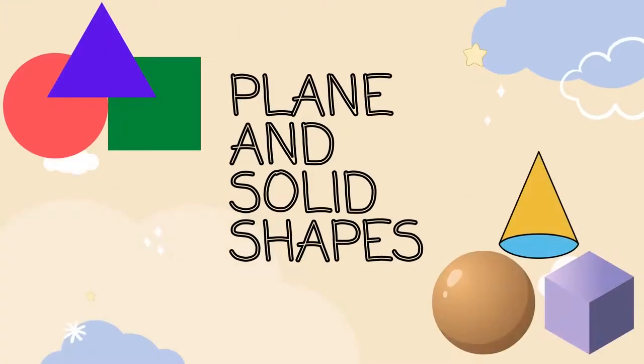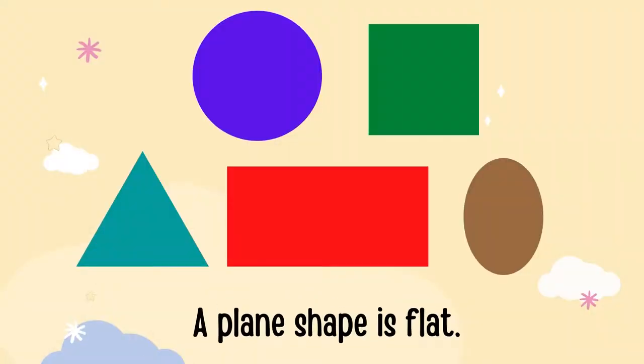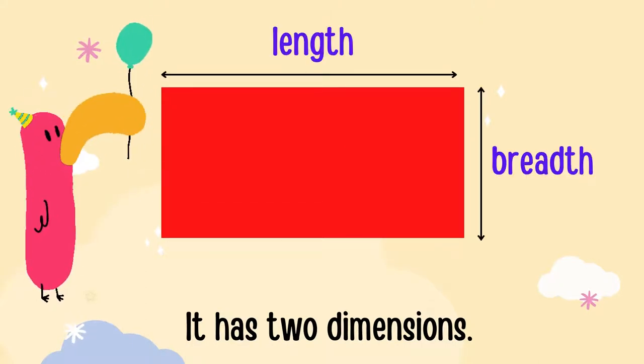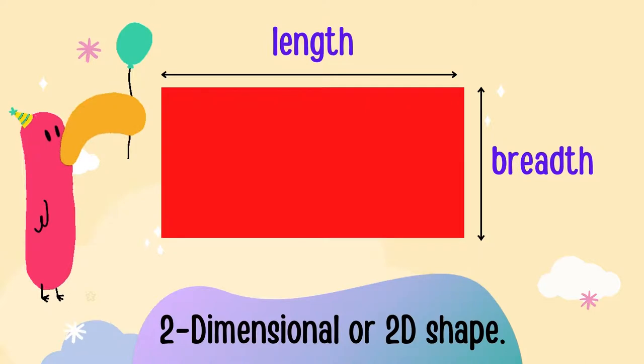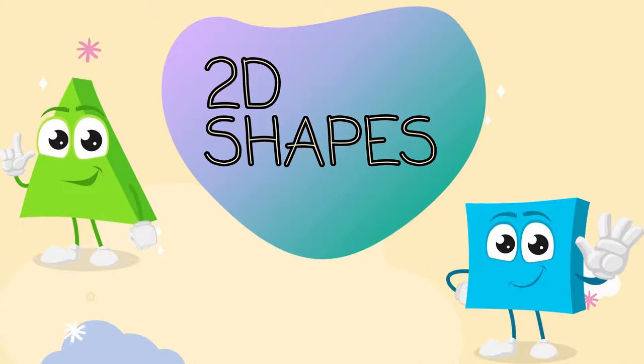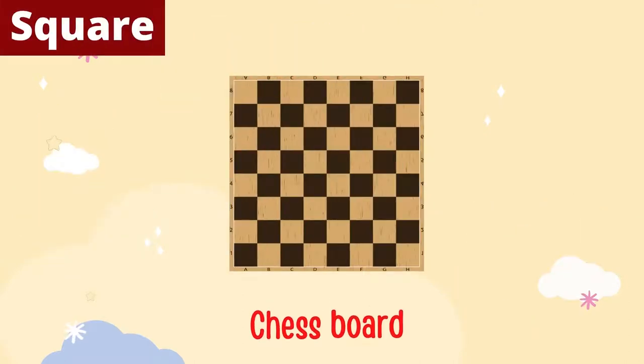In this video, let's learn plane shapes and solid shapes. A plane shape is flat, having only two dimensions: length and breadth. So it is also known as two-dimensional or 2D shape. Let's learn about a few 2D shapes.